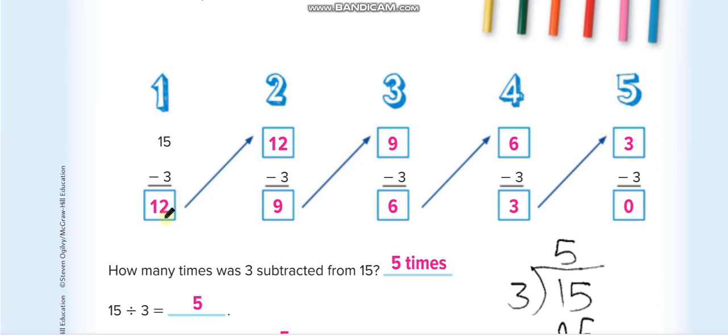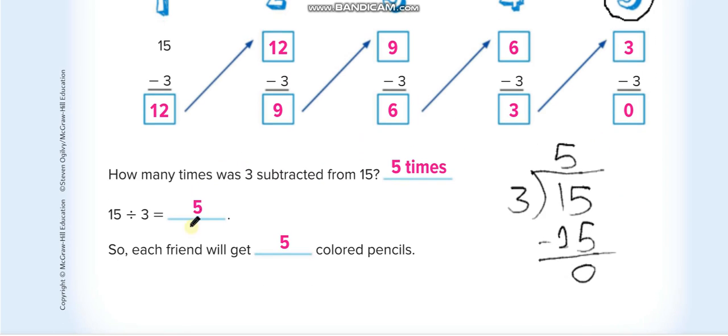15 minus 3 is 12. 12 minus 3 is 9. 9 minus 3 is 6. 6 minus 3 is 3. And 3 minus 3 is 0. So we get the 0. And in how many terms we get the 0? Count them. 1, 2, 3, 4, and 5. So our answer is 5, which we already solved.